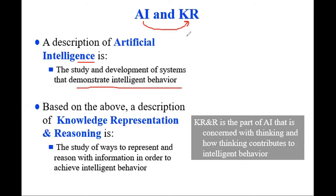From this definition, we can understand knowledge representation. Knowledge representation is what we can understand. What is the study and development of systems that demonstrate intelligent behavior? That is exactly what I am talking about with knowledge representation and reasoning. Knowledge representation and reasoning is the study of ways to represent and reason with information in order to achieve intelligent behavior.